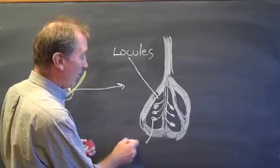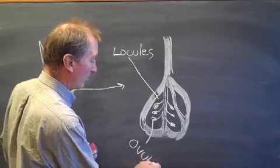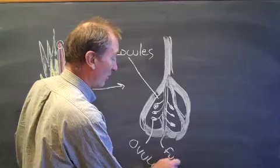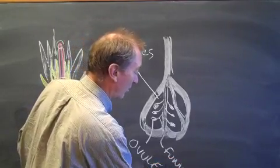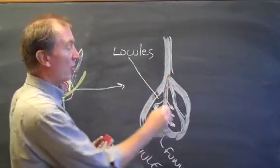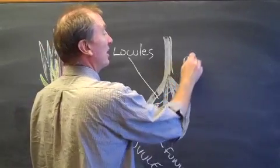So this is the ovule, and this stalk is called the funiculus. And the middle area from which the stalk grows is called the placenta.